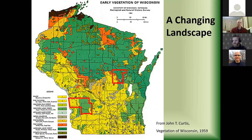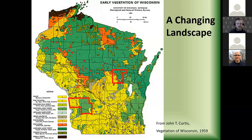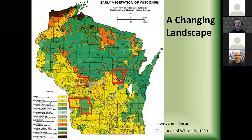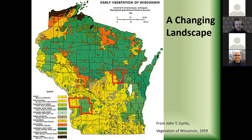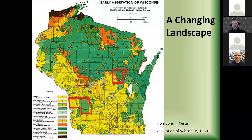I'd like to start with this picture of the early vegetation of Wisconsin — the earliest plant survey done in the state, data compiled by John T. Curtis in his seminal book 'Vegetation of Wisconsin,' published in 1959. This is the best snapshot of what plant communities looked like upon European arrival. We see a wide diversity of vegetation types across the state. In Vernon and Richland County there's a lot of Oak Savanna range, as well as Southern Mesic Forest pre-settlement.